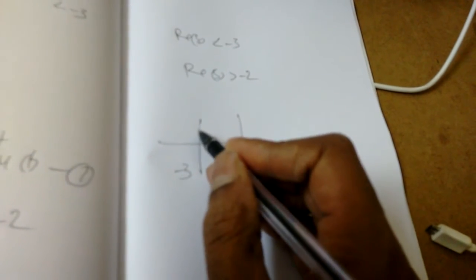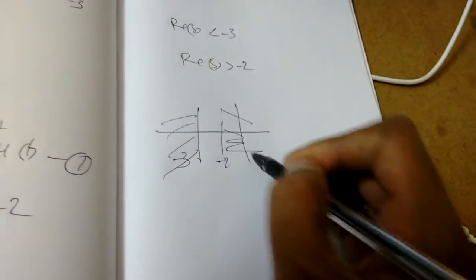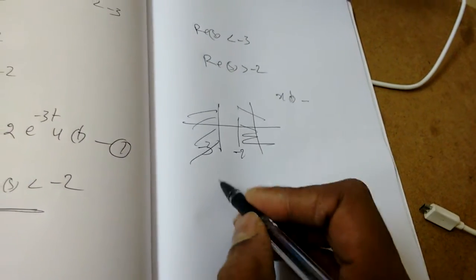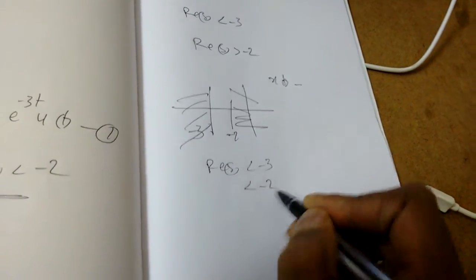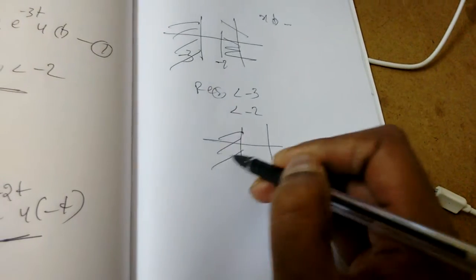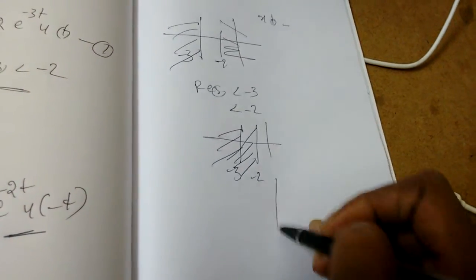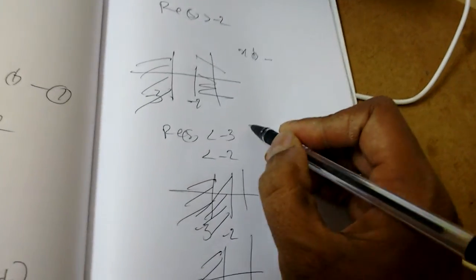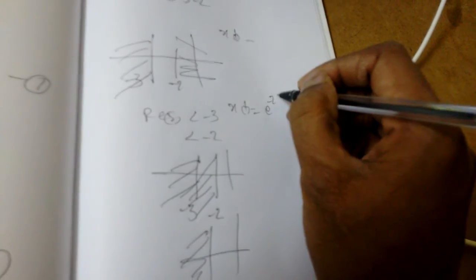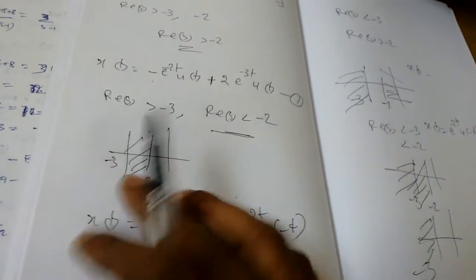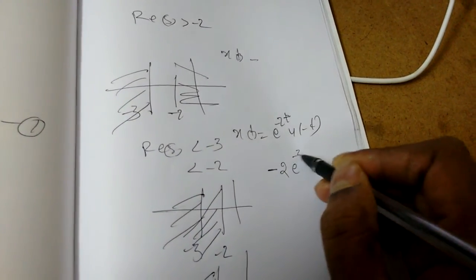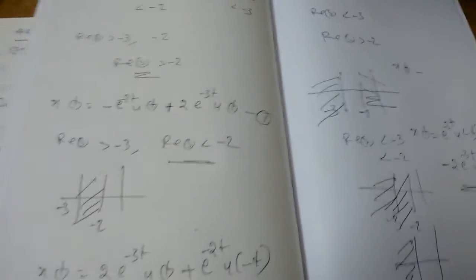The third case: Re(s) < -3 and Re(s) > -2. These conditions cannot have a common ROC — Re(s) < -3 and Re(s) > -2 do not overlap — so no x(t) exists for this case. The fourth and final case: Re(s) < -3 and Re(s) < -2; the common ROC is Re(s) < -3. Then x(t) = e^(-2t)·u(-t) - 2e^(-3t)·u(-t). This is how to find the inverse Laplace transform.